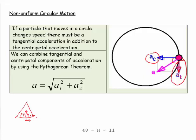And by basically trigonometry, using Pythagoras' rule actually, we can combine these two to get the overall acceleration. So we say if a particle that moves in a circle changes speed, there must be a tangential acceleration in addition to the centripetal acceleration. We can combine tangential and centripetal components of acceleration by using Pythagoras' theorem. So we have the full acceleration is equal to the square root of the tangential acceleration squared plus the centripetal acceleration squared.